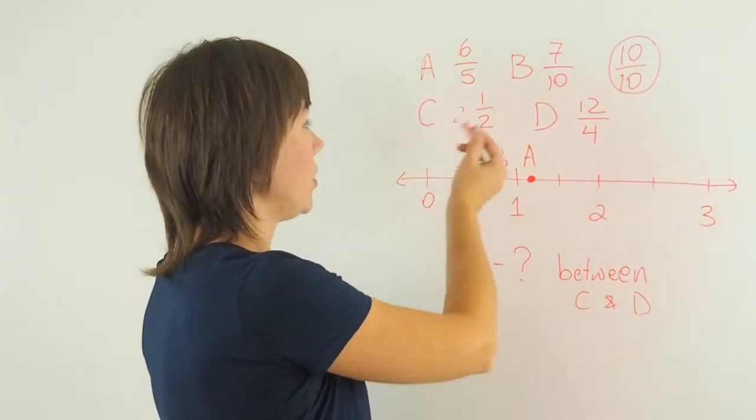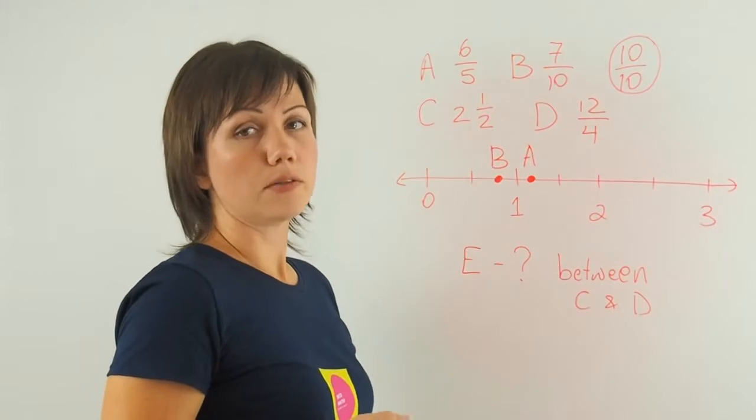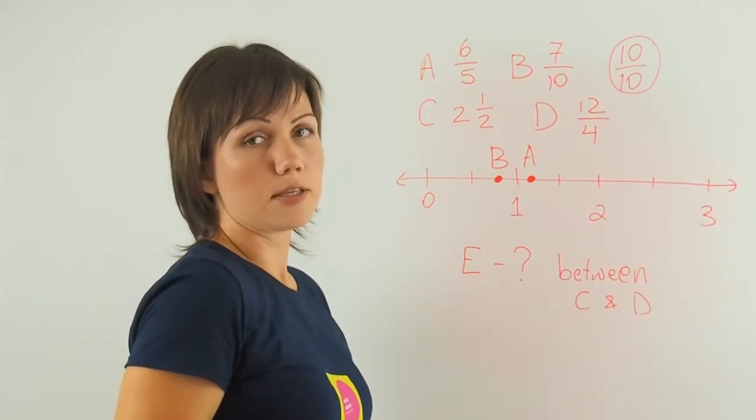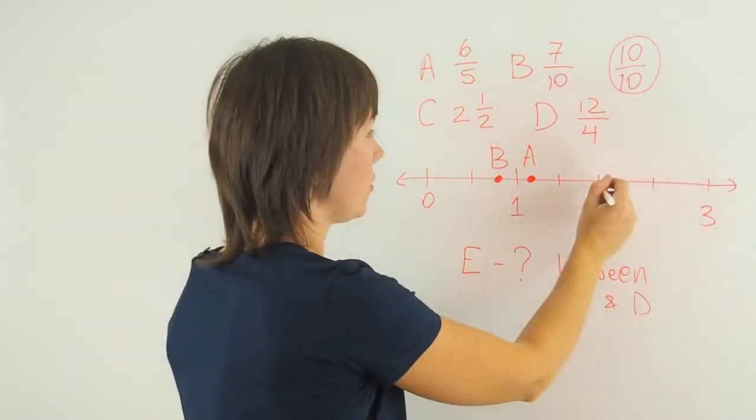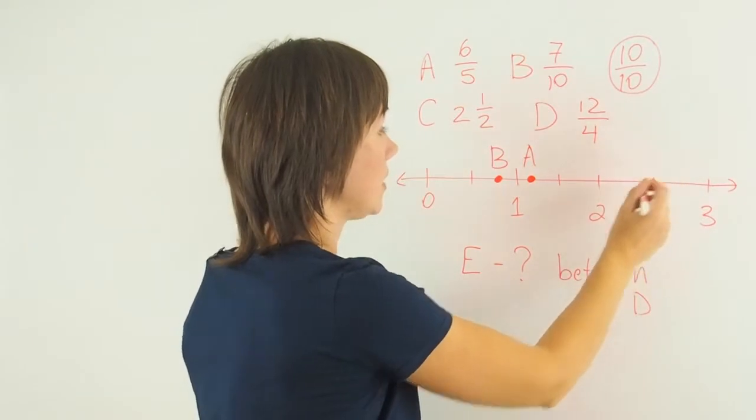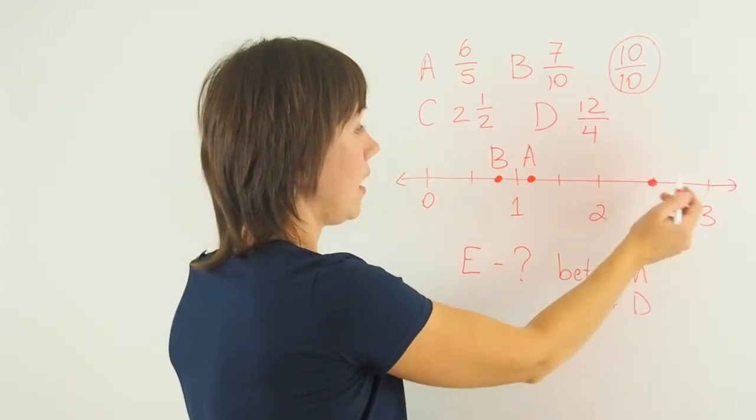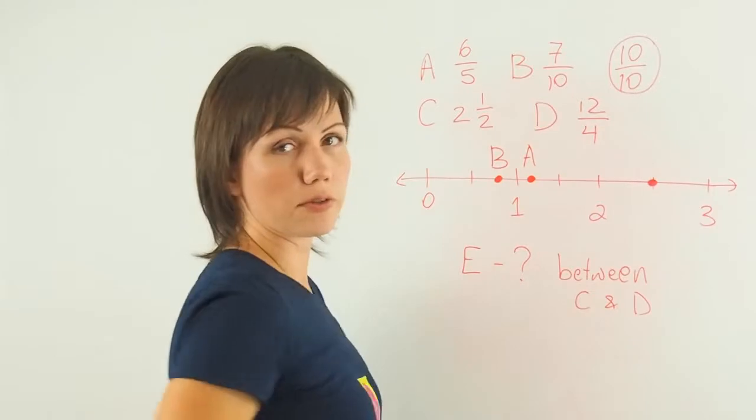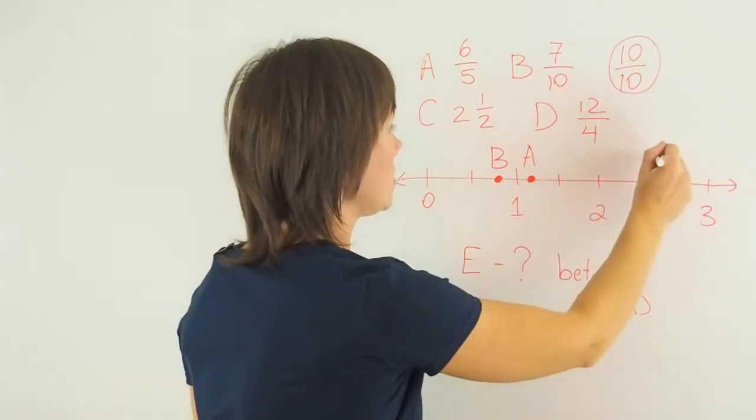The next point C is 2 and 1 half. This is easy to find because 2 and 1 half is right here, halfway to 3. This is point C.